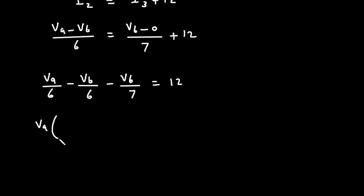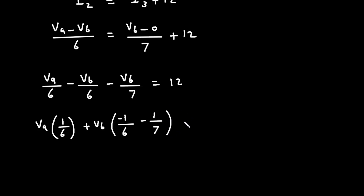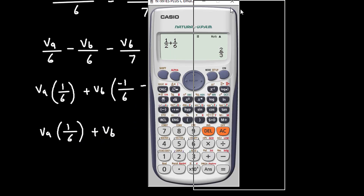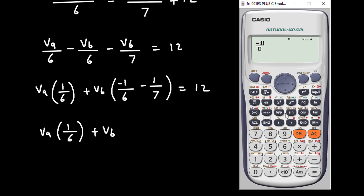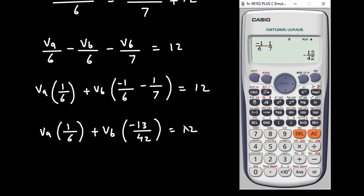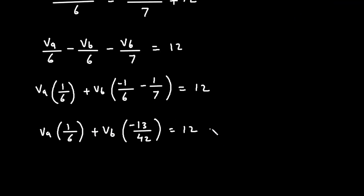We can take VA common: VA in bracket 1 by 6, then plus VB in bracket minus 1 by 6 minus 1 by 7. Simplifying, minus 1 upon 6 minus 1 upon 7 gives minus 13 by 42. So VA times 1 by 6, plus VB times minus 13 by 42, is equal to 12. Let's call this equation number 2.